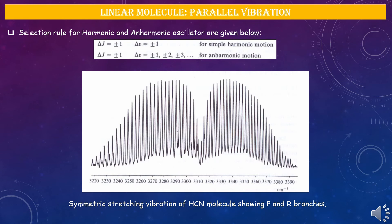For a linear molecule, vibrations are broadly divided into parallel and perpendicular types. For parallel vibrations with simple harmonic motion, the selection rule is ΔJ = ±1, Δv = ±1, ±2, etc. We find similarity with diatomic spectra: P and R branches are equally spaced with no line at the band center. For HCN, which has greater reduced mass than a diatomic system, the B value is 2.843 cm⁻¹ versus 4 cm⁻¹ for CO, so as reduced mass increases, B decreases and line spacing decreases.